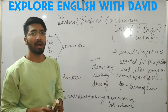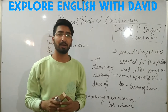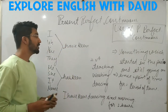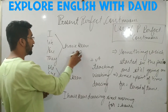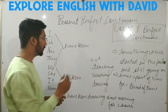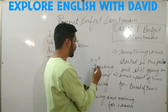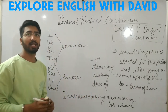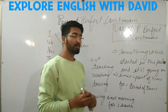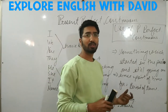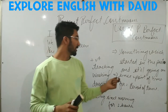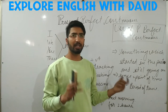Let's understand how we can make sentences in Present Perfect Continuous Tense. First of all, we have to add 'has been' or 'have been' as a helping verb, and then the fourth form of the verb to indicate the action. After that, you have to add 'since' or 'for'.